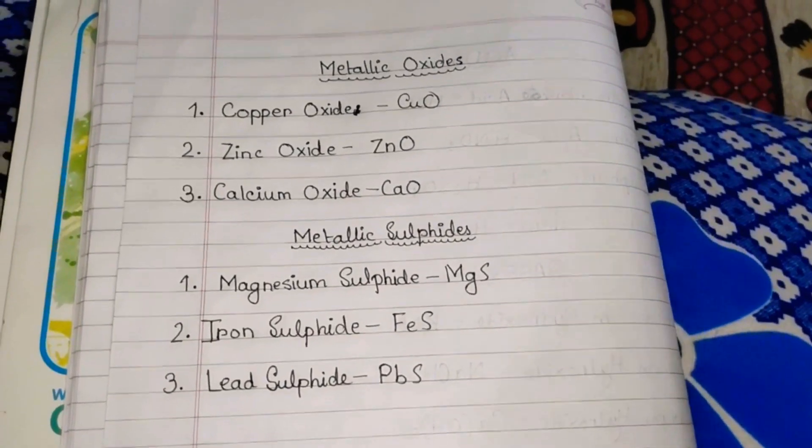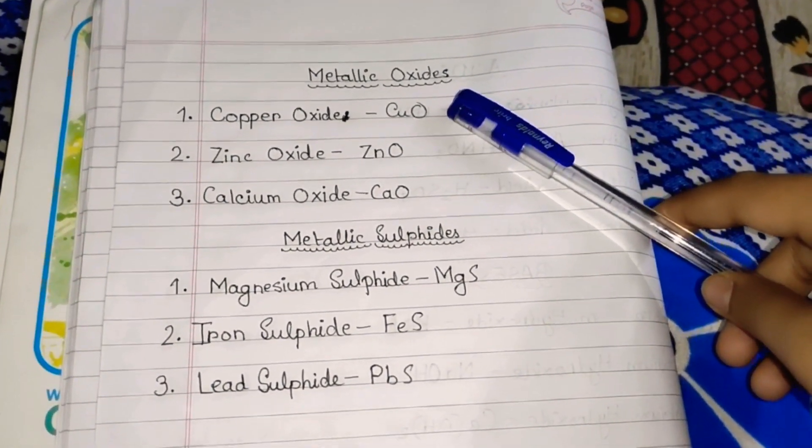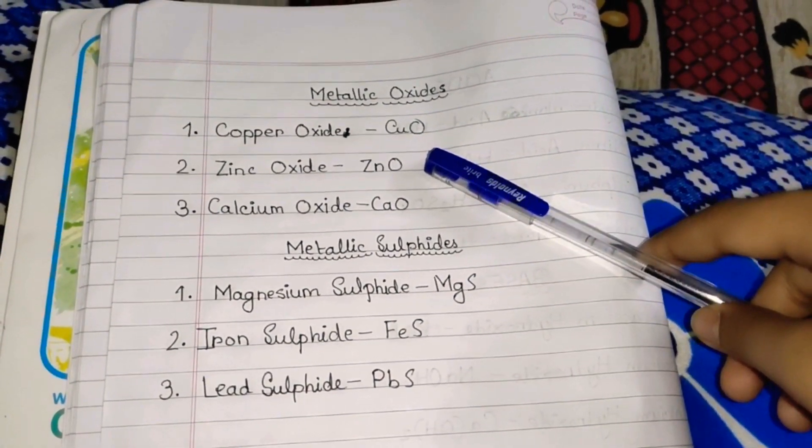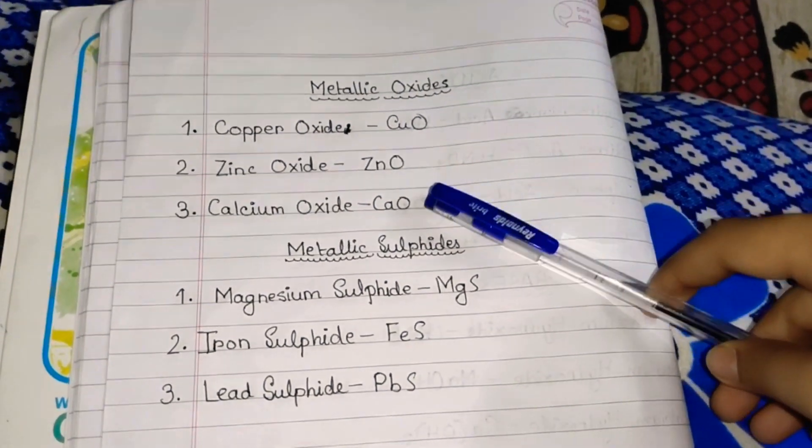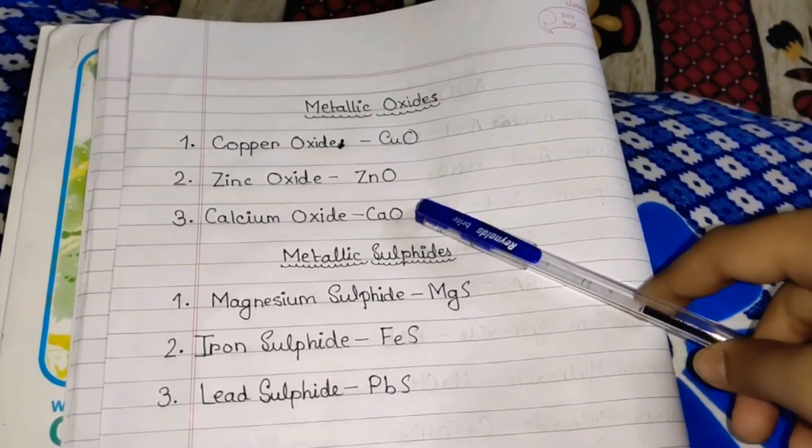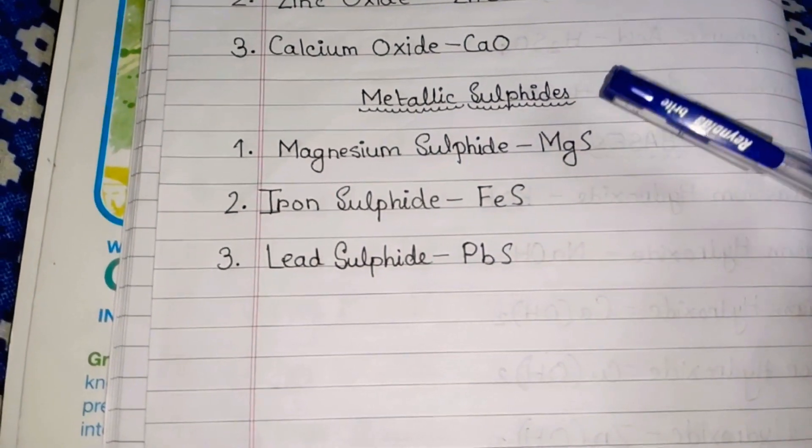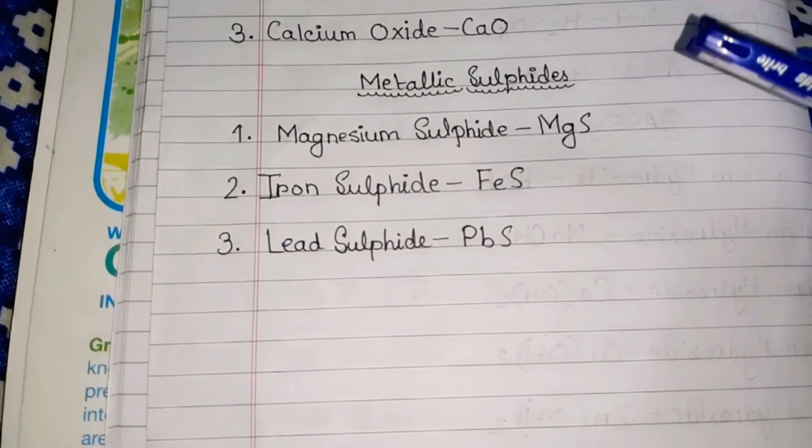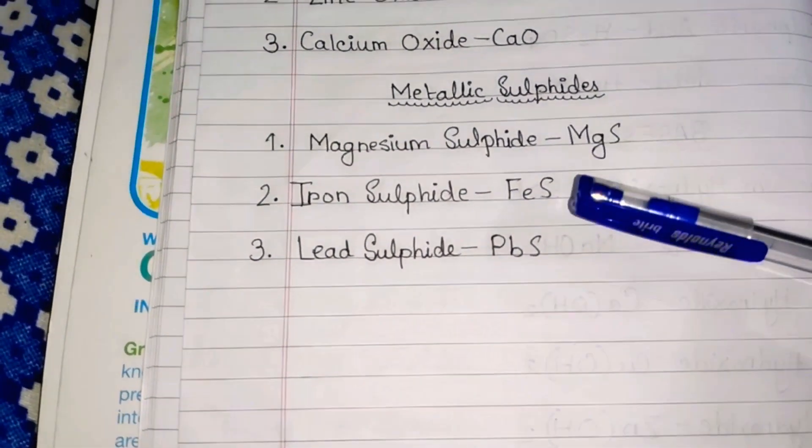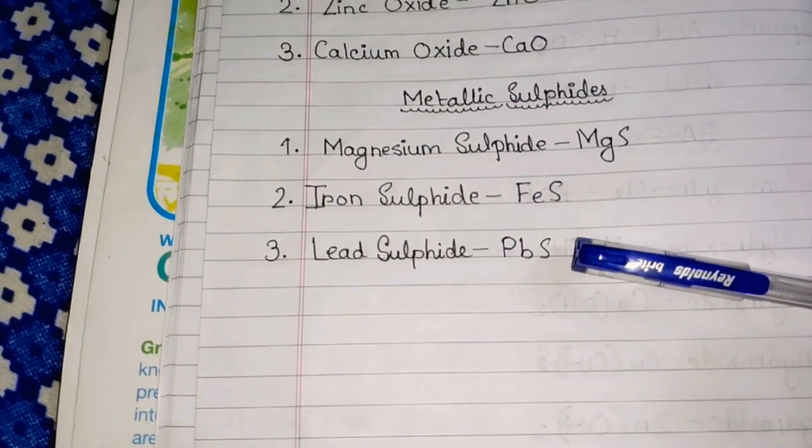Now in the last it's Metallic Oxide. First is Copper Oxide CuO. Second, Zinc Oxide ZnO. Third, Calcium Oxide CaO. Now the last one is Metallic Sulfides. First, Magnesium Sulfide MgS. Second, Iron Sulfide FeS. Third, Lead Sulfide PbS.